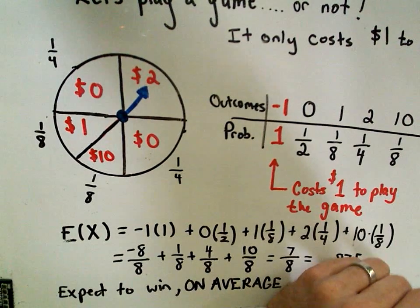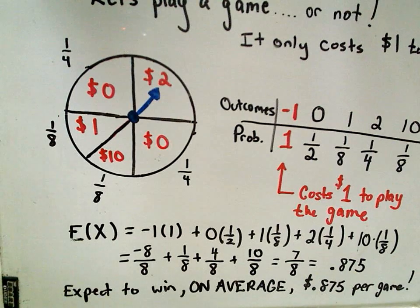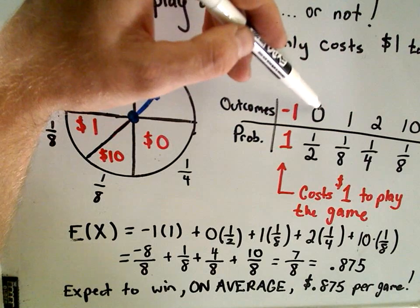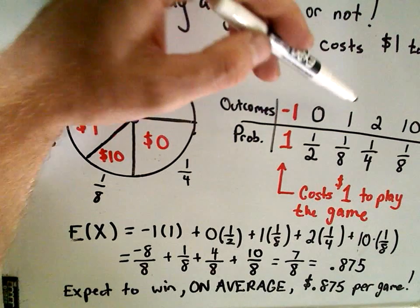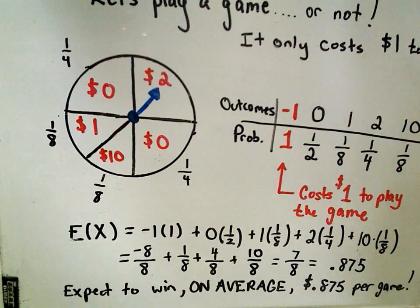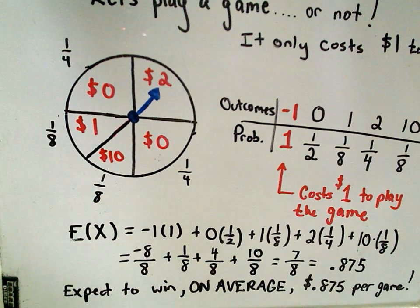Okay, so again, this is why I say on average. Notice the only thing that can happen is you definitely lose your dollar, and then sort of the positive outcomes is you don't. Either you win $0, $1, $2, or $10. It's not possible to win $0.875 per game. But again, it's a long-run average.